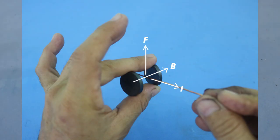If the field and the current have the direction shown, then the force points upwards. If we change the direction of the field or the direction of the current, the force changes direction.